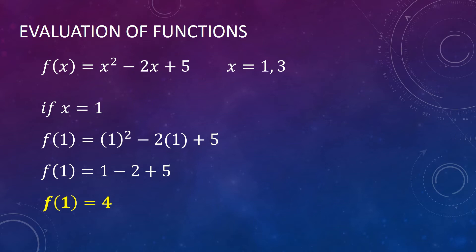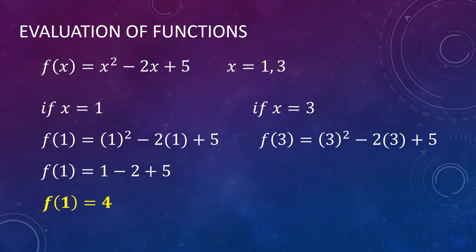So the value of our function is equal to 4 if our x is equal to 1. Then if x is equal to 3, same procedure: f of 3 will be equal to 3 squared minus 2 times 3 plus 5. Simplifying this, f of 3 is equal to 9 minus 6 plus 5, and that gives us f of 3 equal to 8. Meaning the value of our function if x is equal to 3 is 8.